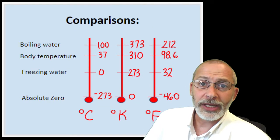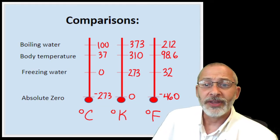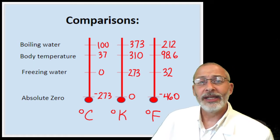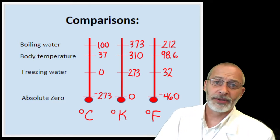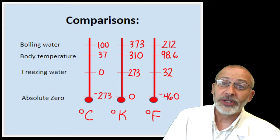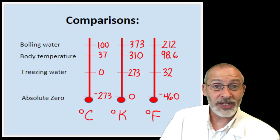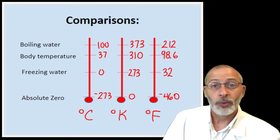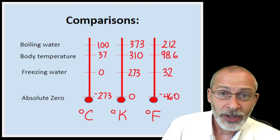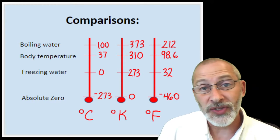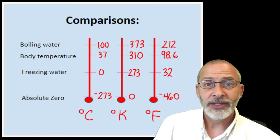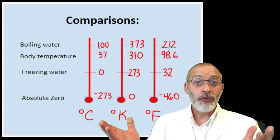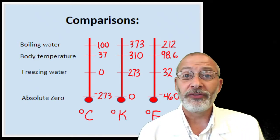You may recall at the end of the period yesterday, we were discussing the different types of temperature scales. We left with this comparison of some common temperatures between the three different temperature scales: the Celsius scale, the Kelvin scale, and the Fahrenheit scale, which we will no longer be using. We will be using the Celsius scale — previously known as the centigrade scale — for our purposes in science class and in the lab tomorrow. But before we get to tomorrow's lab, we have to finish up our notes.